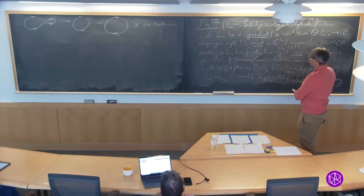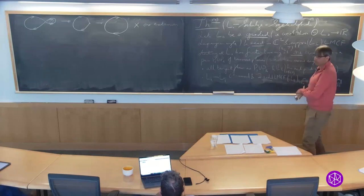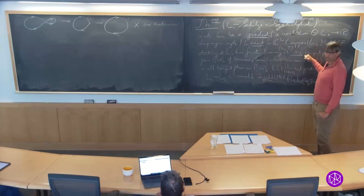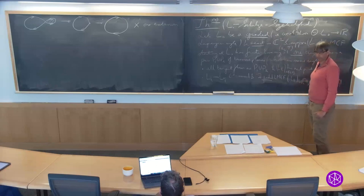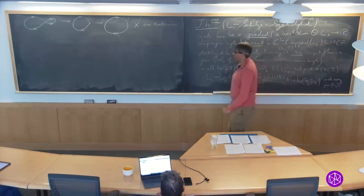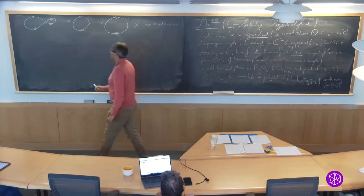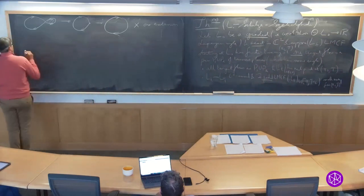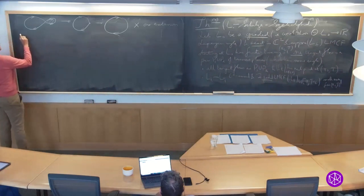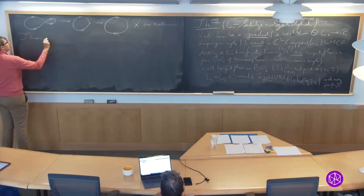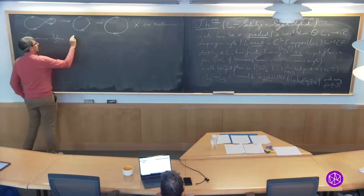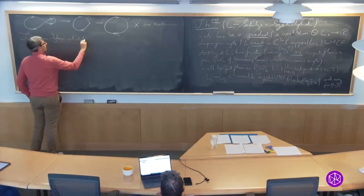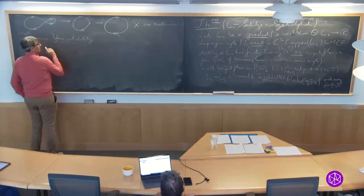So to summarize so far: we can recognize neck pinch singularities — we just need to see one tangent flow — and we can resolve them by flowing past while keeping the flow graded. Now the question is stability.